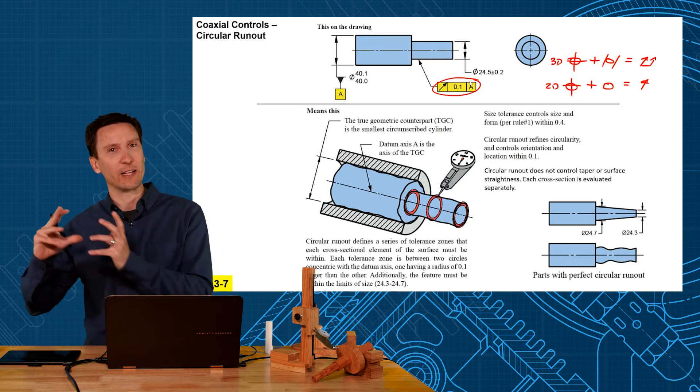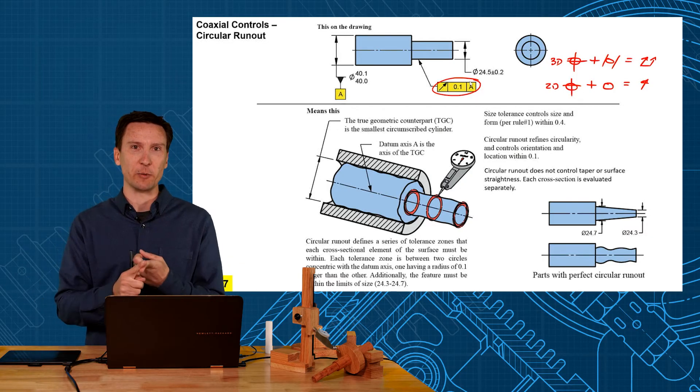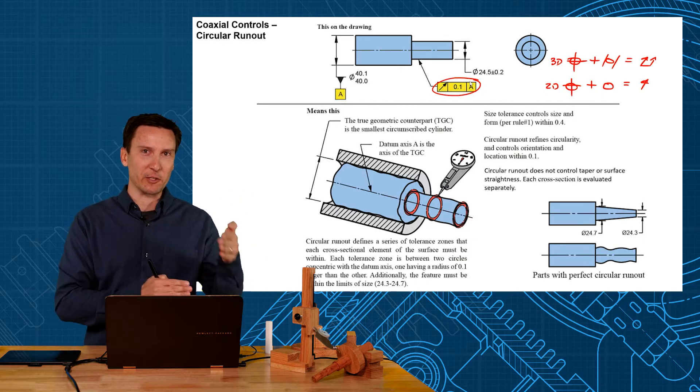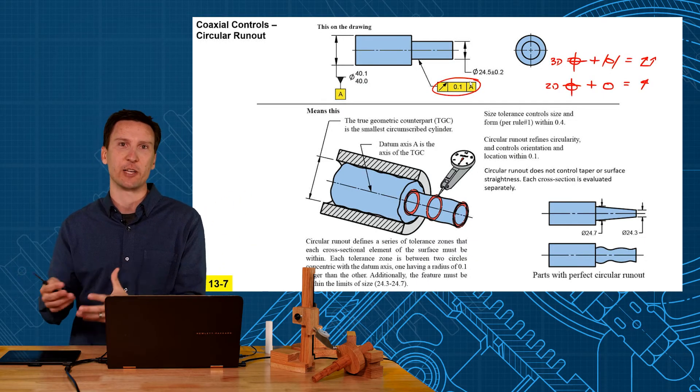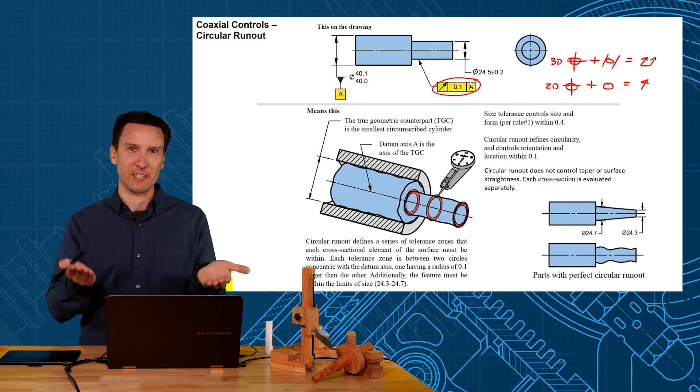Now how many you choose to measure? Well that's a different conversation. That's part of a quality plan. What I want is everything to be within the tolerance. What I choose to measure three or five or a hundred cross sections. That's how much risk versus cost I'm willing to take.